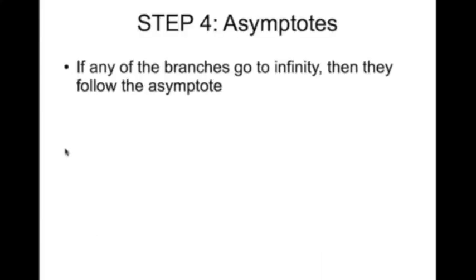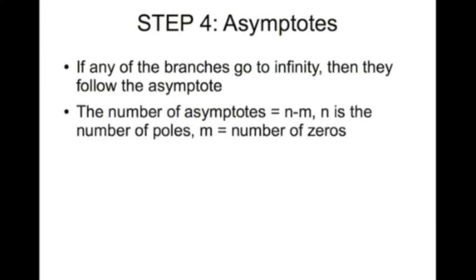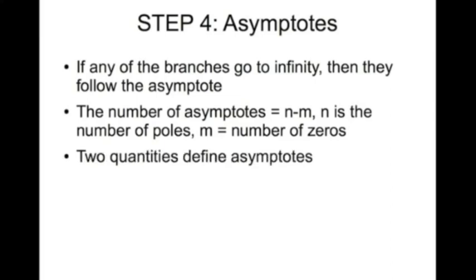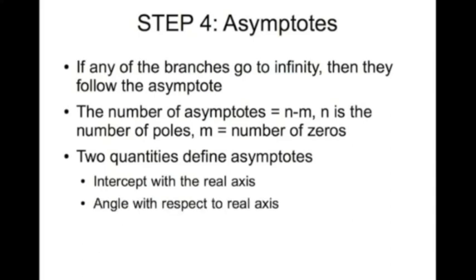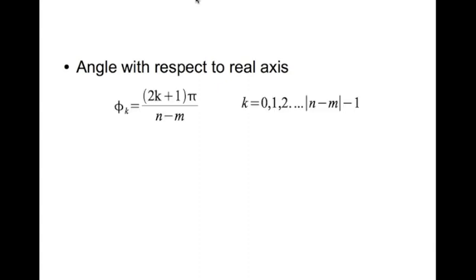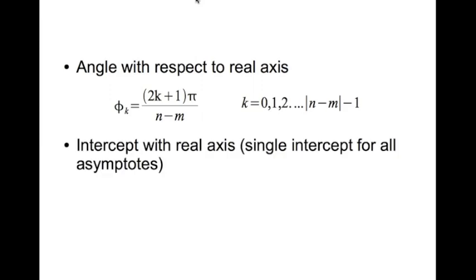When branches go to infinity, they follow asymptotes. The number of asymptotes equals n minus m, where n is the number of poles and m is the number of zeros in the loop transfer function. The angle of each asymptote with respect to the real axis is given by φ_k = (2k + 1)π / (n − m), where k goes from 0, 1, up to |n − m| − 1.